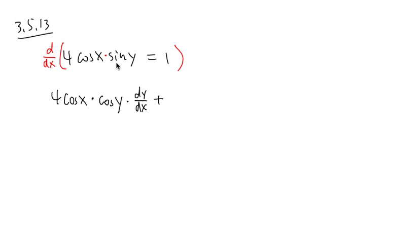And you add the second function, which is sine y, you just copy it down, and multiply by the derivative of this. Derivative of 4 cosine x is going to be negative 4 sine x. And that's equal to derivative of 1, which is 0.